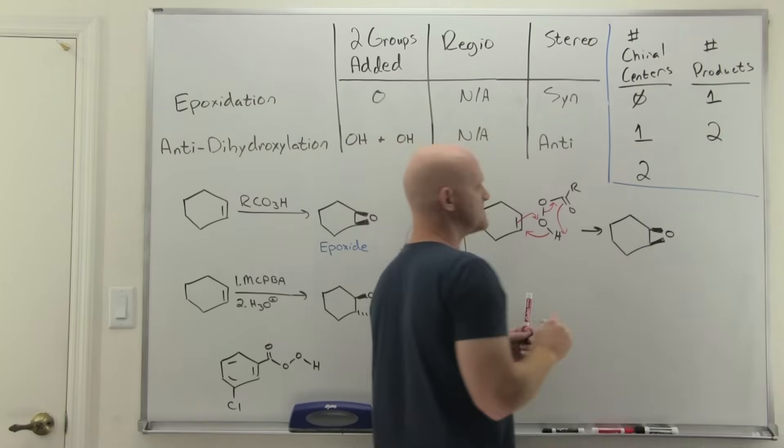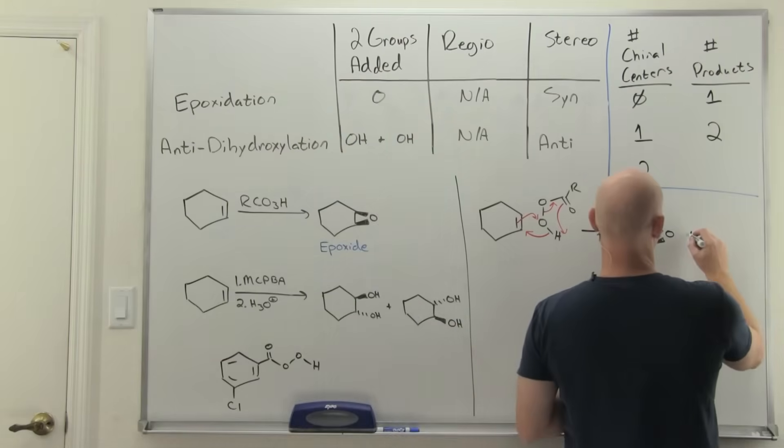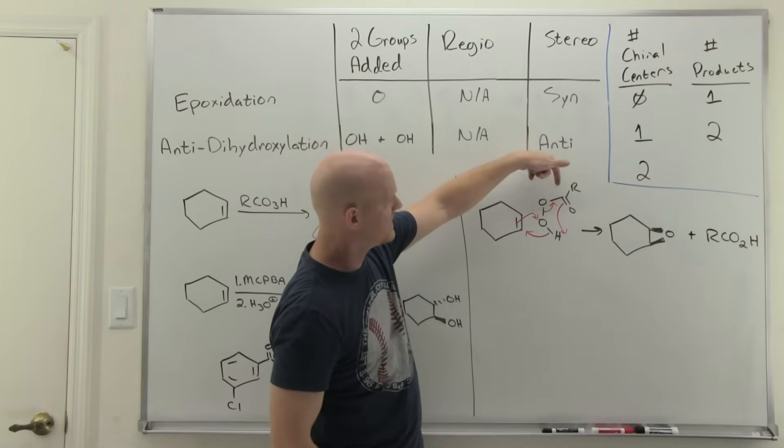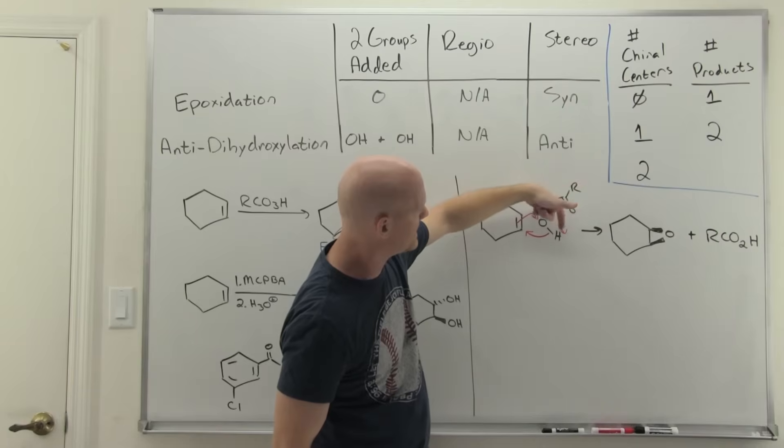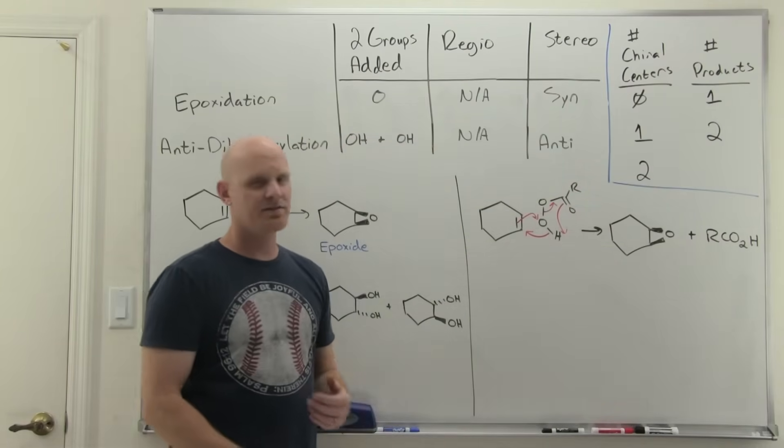Whether these are both wedged bonds or both dashed bonds, it is exactly the same thing. We're going to end up with just a plain old carboxylic acid. This carbon here is going to have a double bond to this oxygen. This will now be a single bond to an O that now has an H, and it will be a carboxylic acid. There's the epoxidation step.